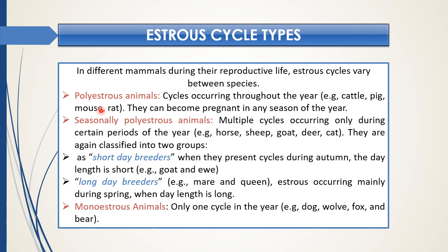Some animals are seasonally polyestrous, meaning they have multiple cycles occurring only during a certain period of the year — like horse, sheep, goat, deer, and cat. They are again classified into two important groups. The first is short-day breeders, where estrus cycles occur during autumn only, when day length is short — like goat and ewes.